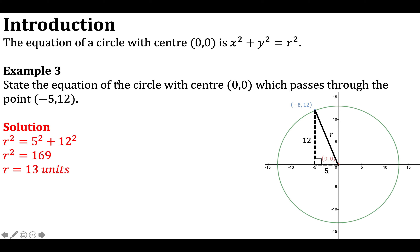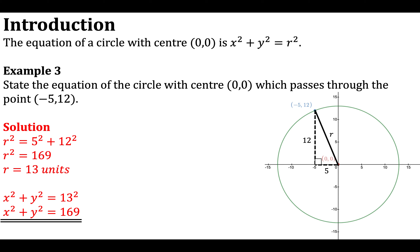Remember, we're not finished — we're asked to state the equation of the circle. Since it has centre at the origin, it's x squared plus y squared equals R squared. So that's x squared plus y squared equals 13 squared, and squaring 13 gives us 169. Therefore the equation is x squared plus y squared equals 169.